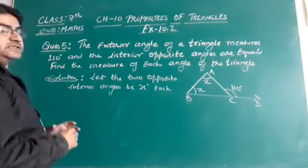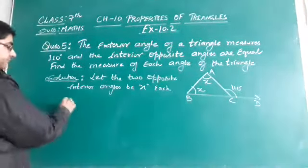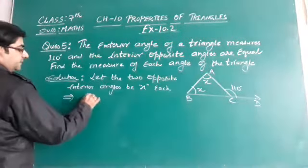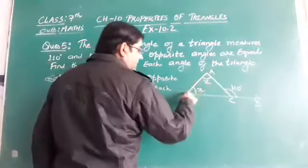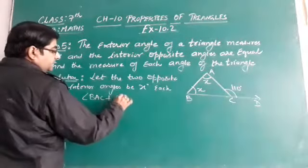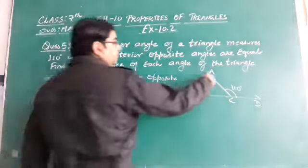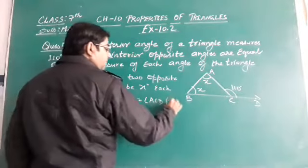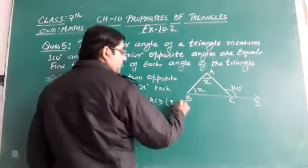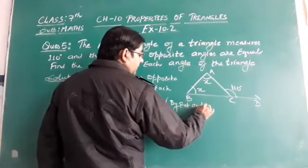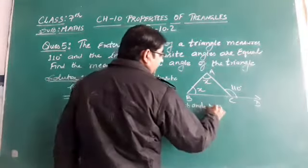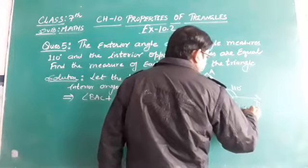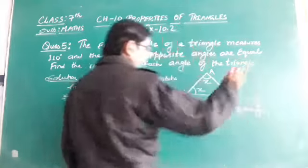By the exterior angle property of a triangle, we have angle BAC plus angle ABC will be equal to angle ACV, that is exterior angle ACV, by the exterior angle property.